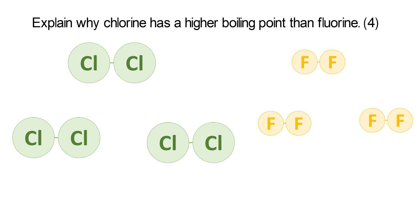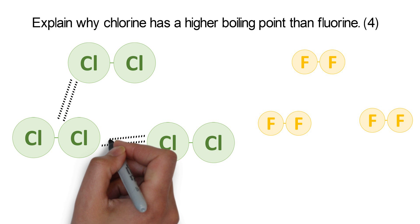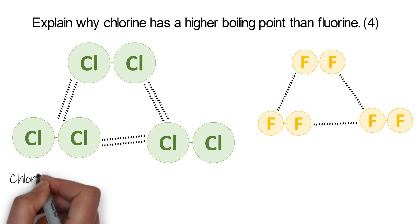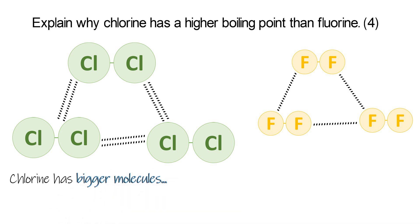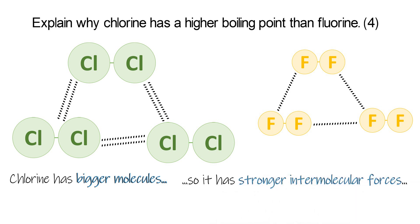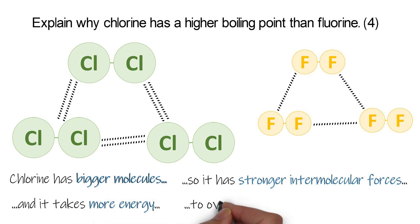When we're boiling something, what we're trying to do is split up the molecules. We've got three chlorine molecules and three fluorine molecules, and between these molecules there are intermolecular forces we need to overcome. The intermolecular forces on the chlorine molecule are much stronger than on the fluorine molecule, because the molecules in chlorine are bigger. So your first marking point: chlorine has bigger molecules. That means it has stronger intermolecular forces. Therefore it takes more energy to overcome them — we have to get chlorine hotter before it will boil.